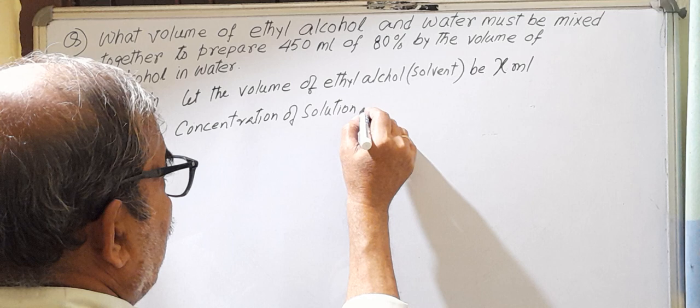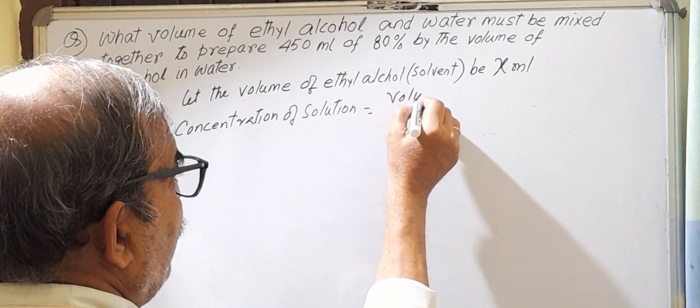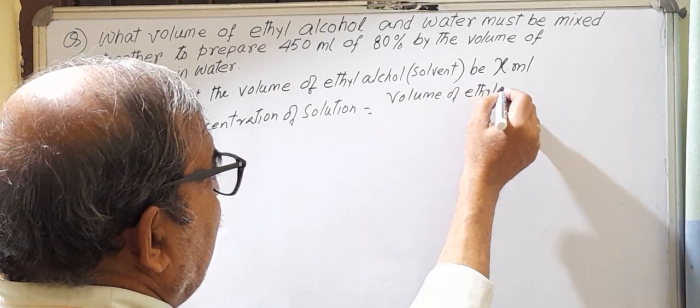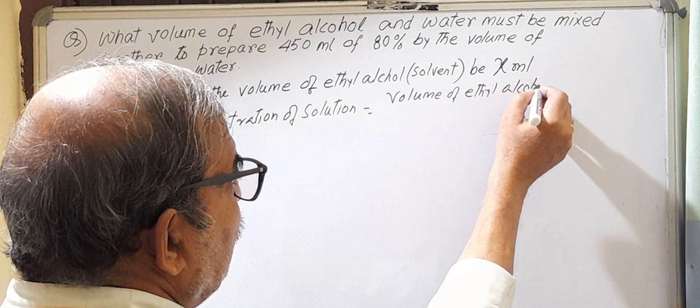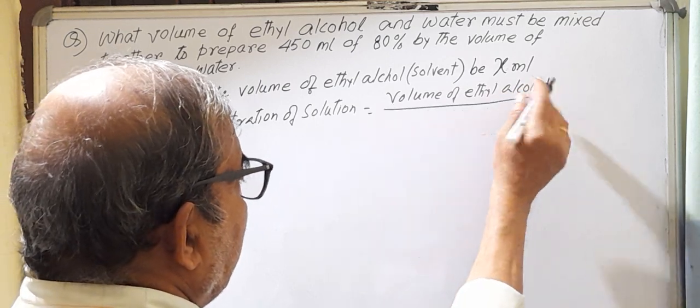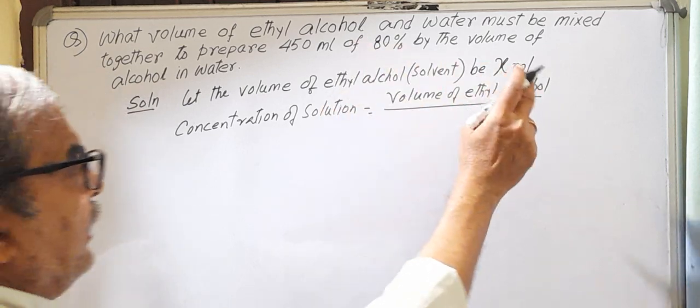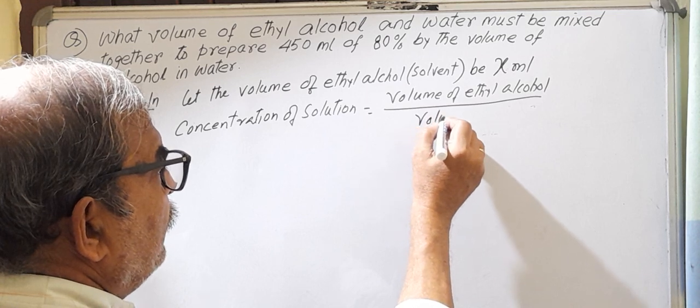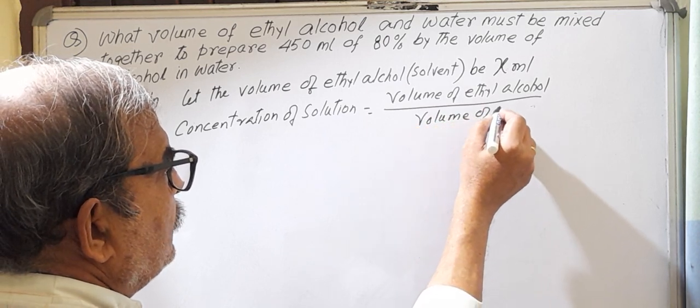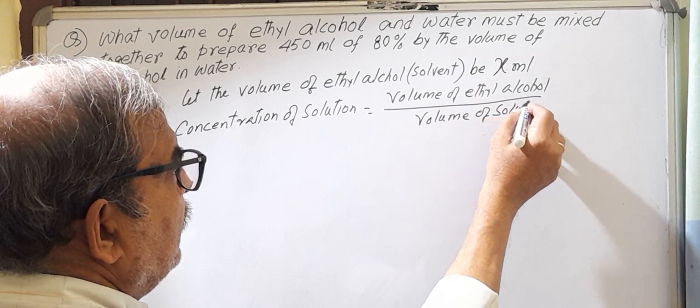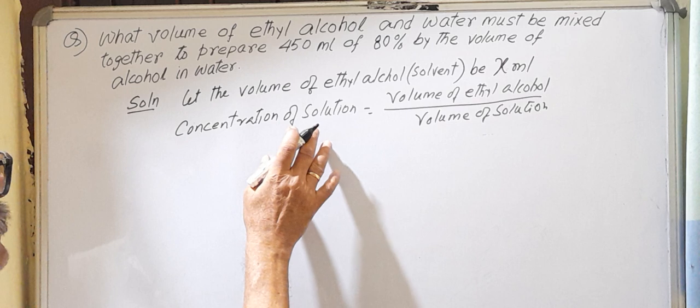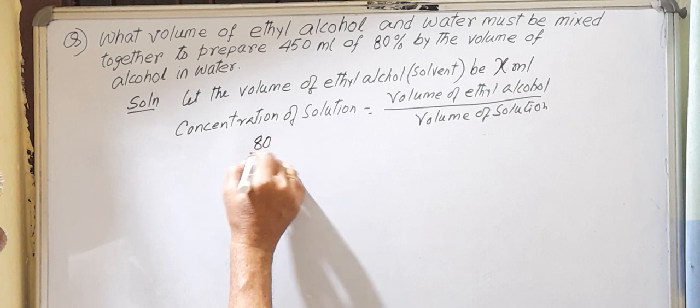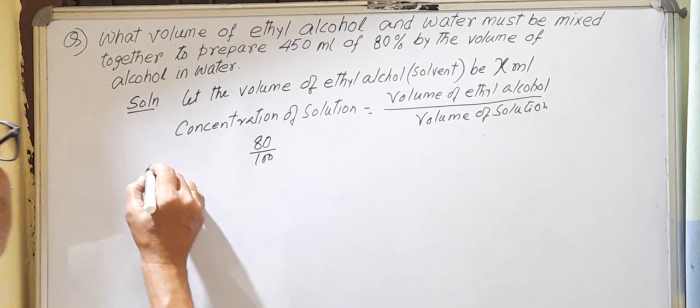Concentration of solution equals volume of ethyl alcohol divided by volume of solution. Remember solvent and solute, the volume of solutions. So the given concentration of solution is 80%, 80 by 100.